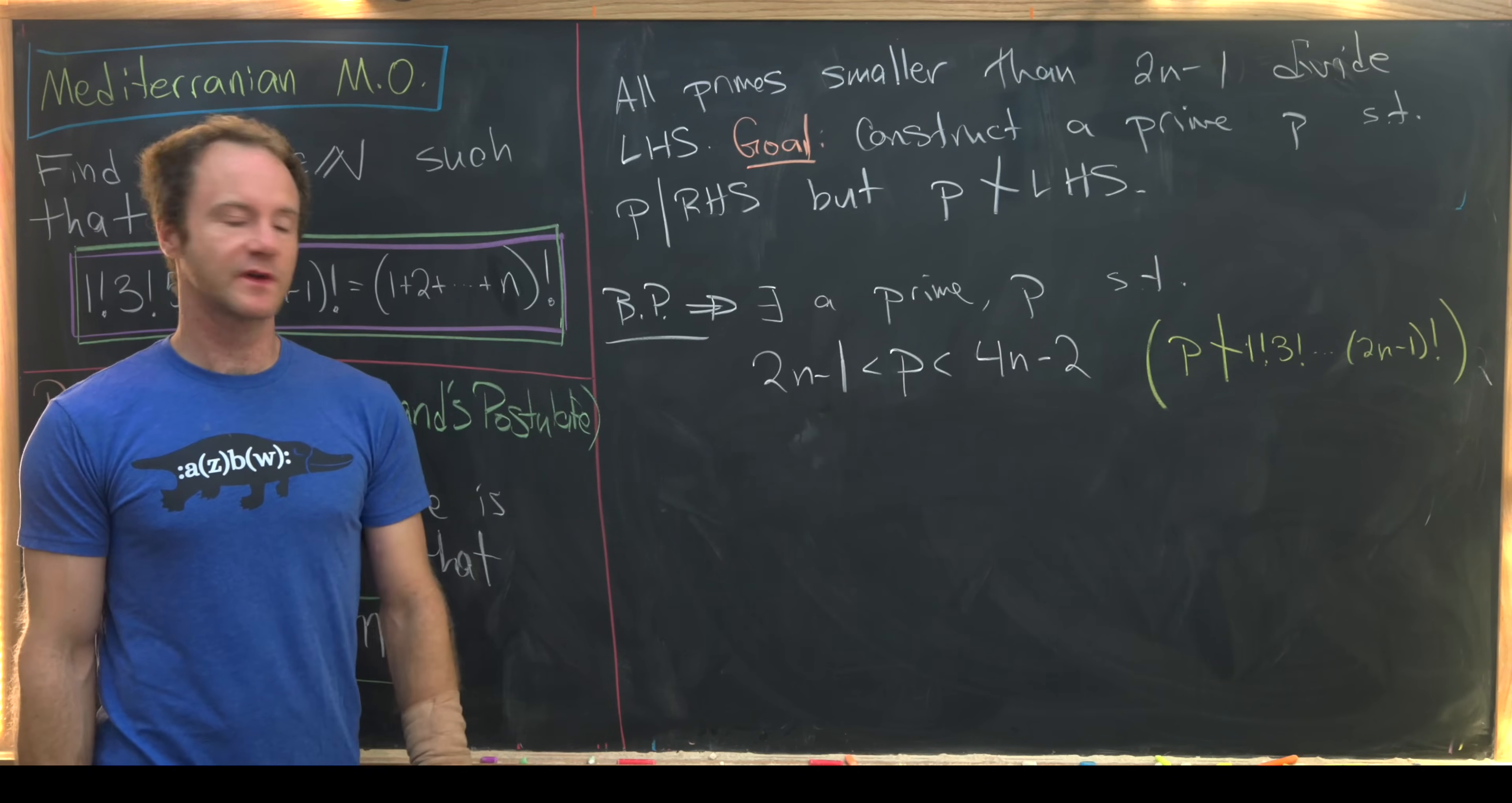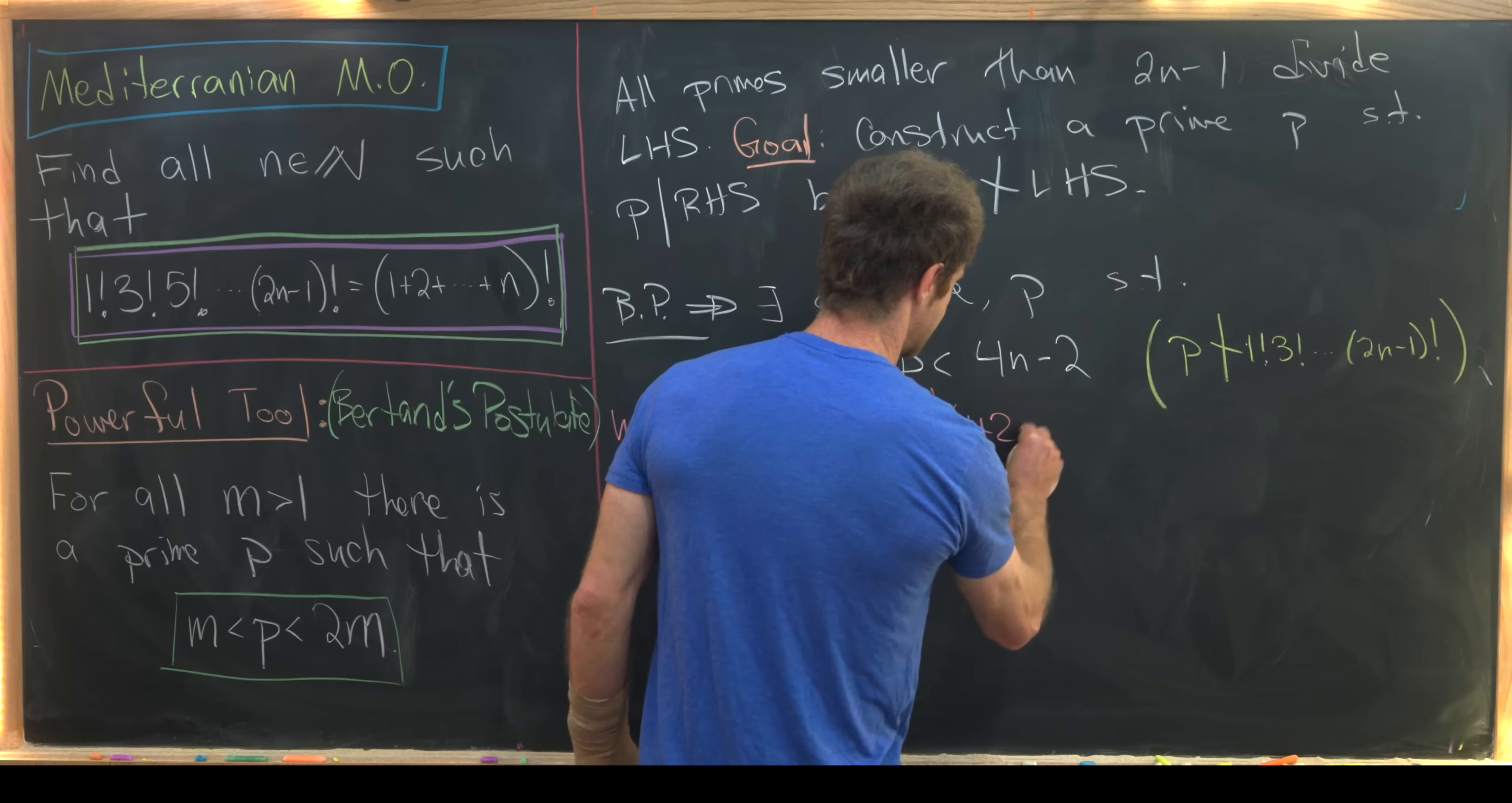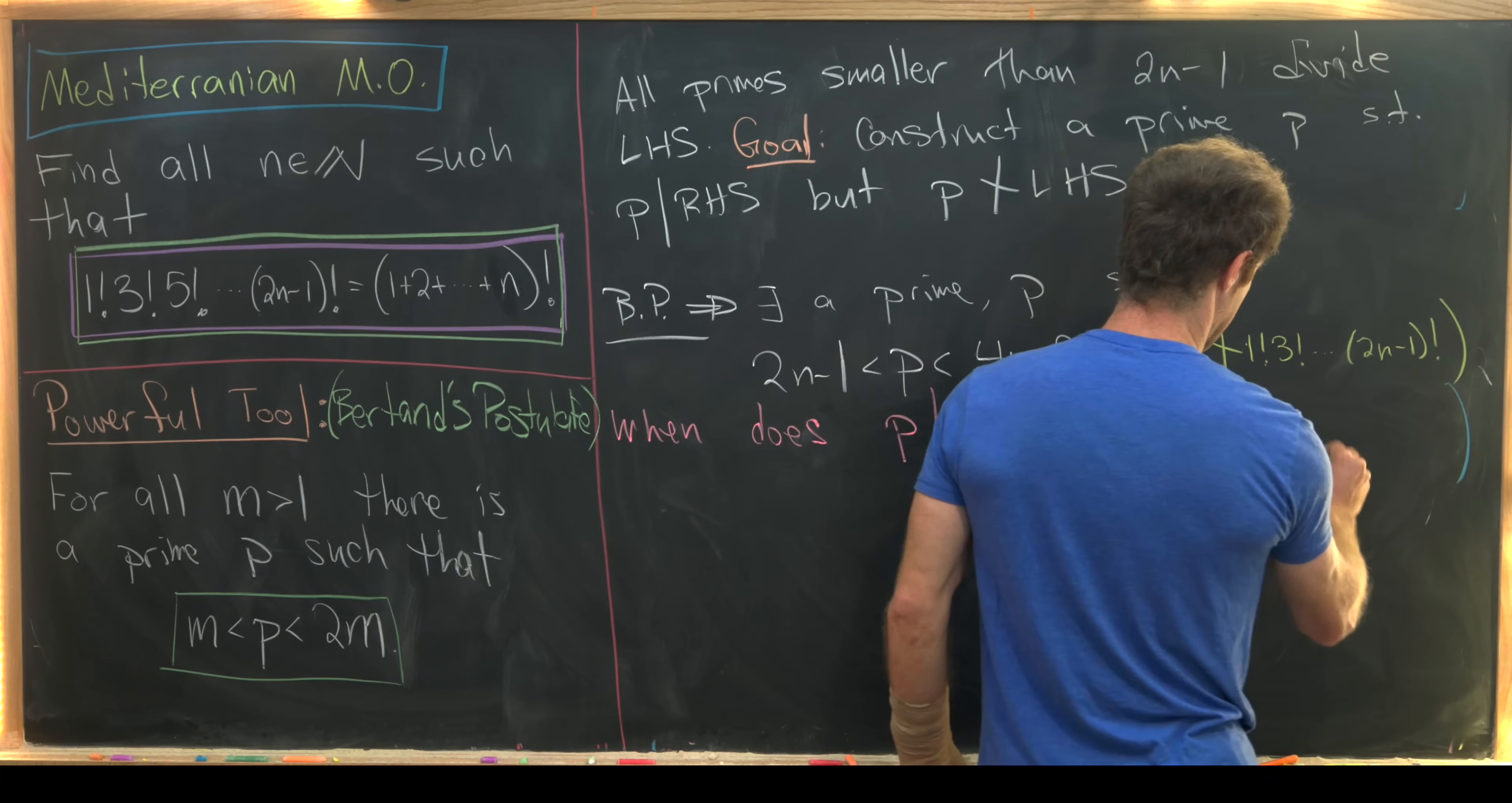But now we'll be off to a really good start if we can answer the following question: when does our prime p divide the right-hand side of this equation? And I'll write that out in this case: 1 plus 2 plus all the way up to n factorial. And let's go ahead and point out that in this setup when p does not divide the left-hand side, but p does divide the right-hand side.